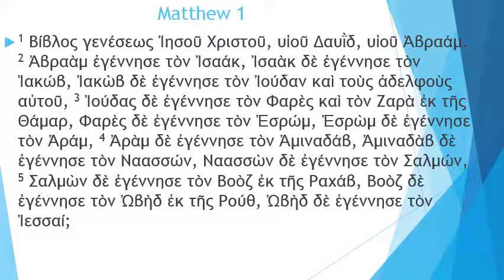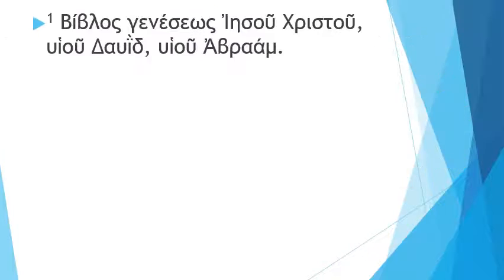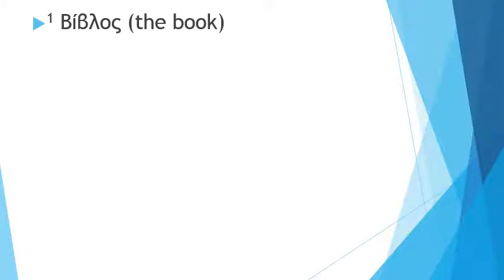So we're just going to translate that first line. Biblos Geneseos, Iesu, Christu, Huio, Dawid, Huio, Abram. First, 'Biblos' — the book. You might ask why it doesn't have a definite article if it's 'the book.' Writers in Greek in the New Testament annoyingly leave out the definite article where you would expect it, but I think the reason is because this is a title. The title in the ancient world was not in fact Matthew.